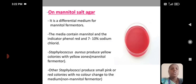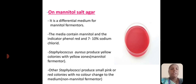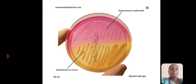On mannitol salt agar, it is a differential medium for mannitol fermenters. The media contains mannitol, the indicator phenol red, and 7 to 10% sodium chloride. Staphylococcus aureus produces yellow color colonies with a yellow zone. Other Staphylococcus species produce small pink or red color colonies with no color change to the media.